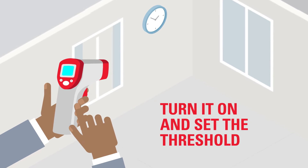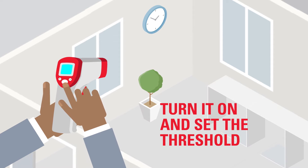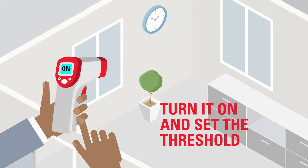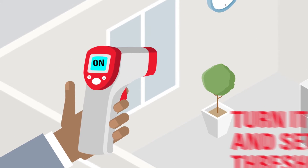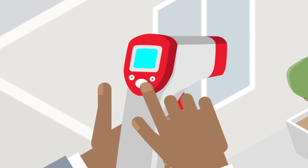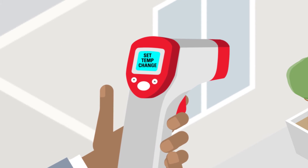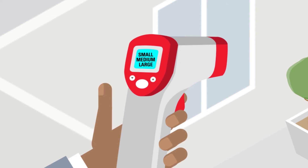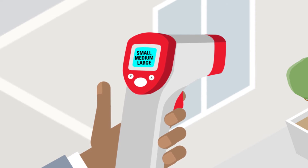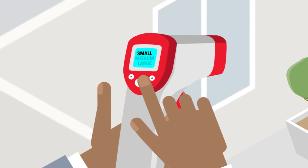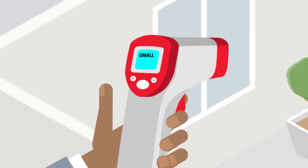To get started, turn on the unit by pressing the on-off button, then set the threshold for temperature change. This means the device will detect small, medium, or large temperature changes based on what you select.